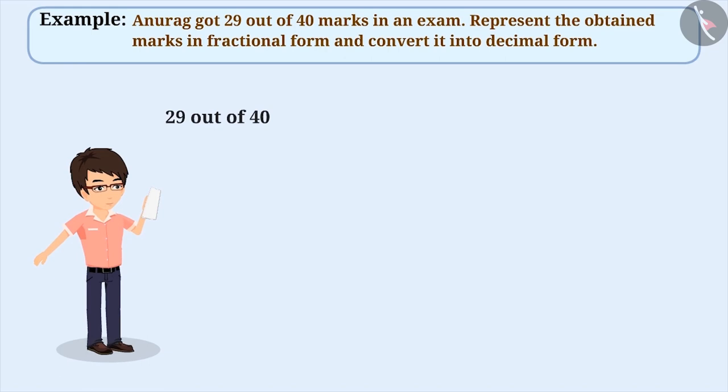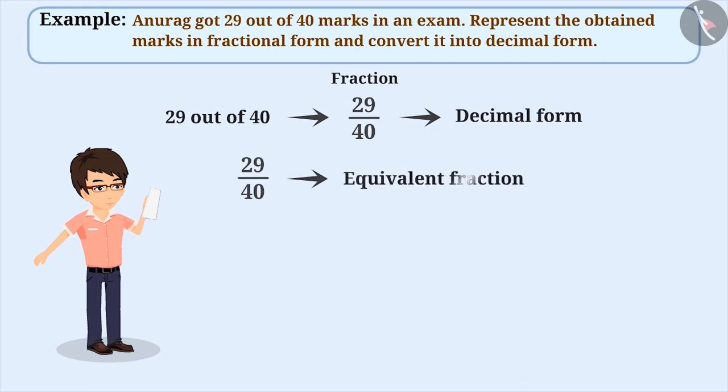Anurag got 29 out of 40 marks, so the fraction of the obtained marks will be 29 by 40. Let us represent this in decimal form. To do so, we need to find the equivalent fraction of 29 by 40 whose denominator should be 10, 100, or 1000.